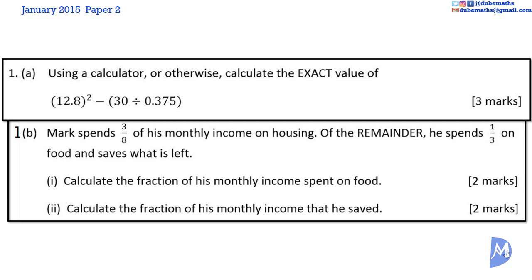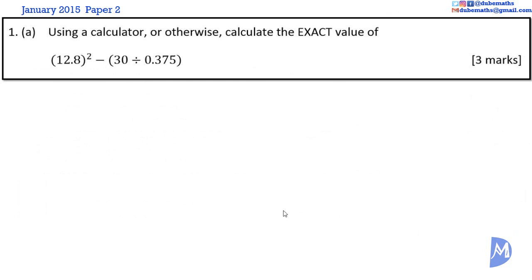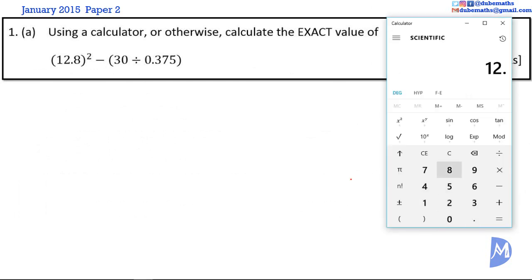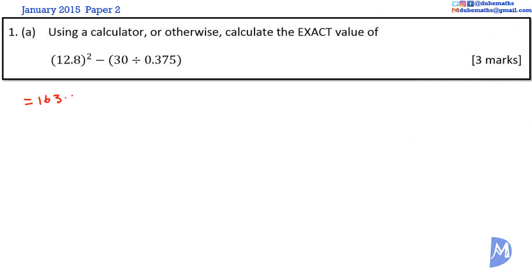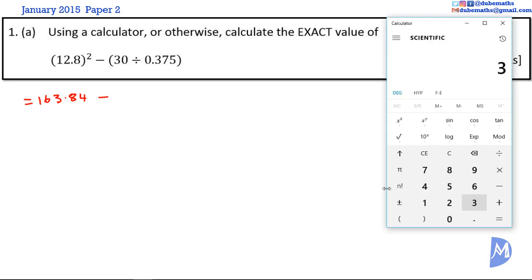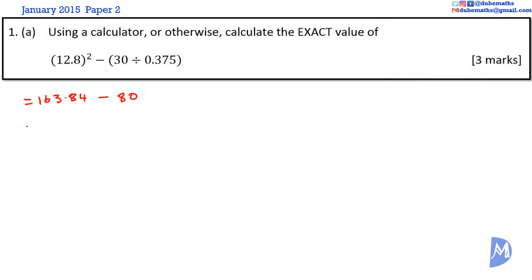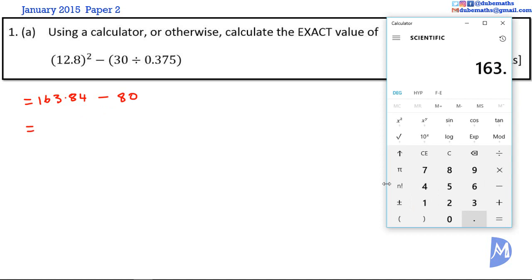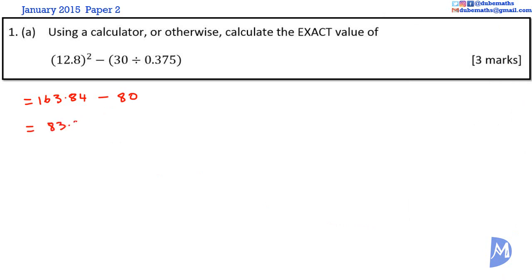Last chance to pause the video. Okay, let's go. 1A. We'll work out 12.8 squared first. 12.8 squared is equal to 163.84. Subtract 30 divided by 0.375. 30 divided by 0.375 is equal to 80. 163.84 minus 80 is equal to 83.84.